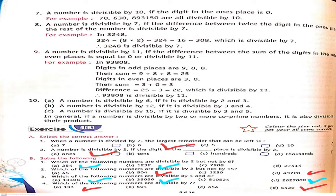Now, point 7 — a number is divisible by 10. What do you need to see? The ones place digit must be 0.